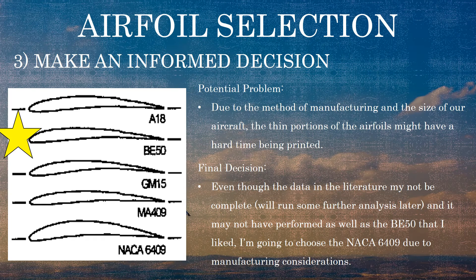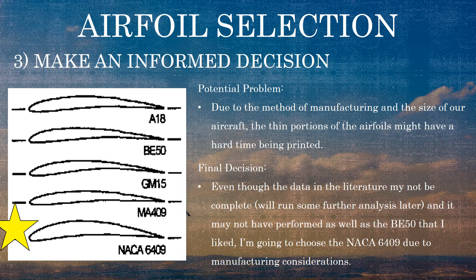However, there are other considerations to take into account — specifically, the method we're using to manufacture our airfoil. We're going to be 3D printing this airfoil shape, and we might run into a problem because if you look at the trailing edge of many of these airfoils, they start to get pretty thin near the back edge, and 3D printing doesn't always work well when things get that thin. So even though I think the BE50 performs better, due to manufacturing considerations I'm actually going to choose the NACA 6409 because its trailing edge is a little bit thicker and I think it's going to print better. If later analysis shows I need better performance, I may look at a different airfoil or adjust this shape slightly.